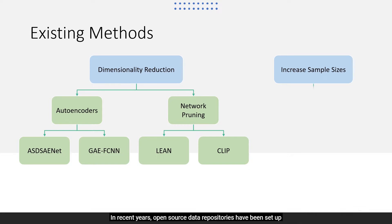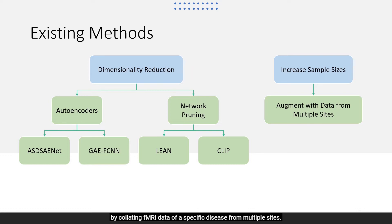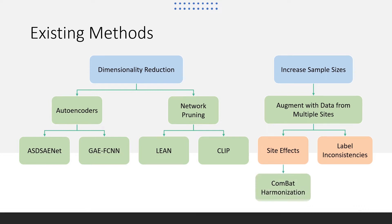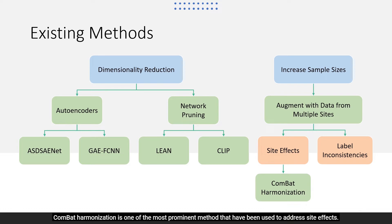Another possible way to overcome overfitting is to increase the dataset sizes. In recent years, open-source data repositories have been set up by collating fMRI data of a specific disease from multiple sites. However, using such datasets to augment our existing dataset could introduce unwanted variations due to site effects and label inconsistencies.